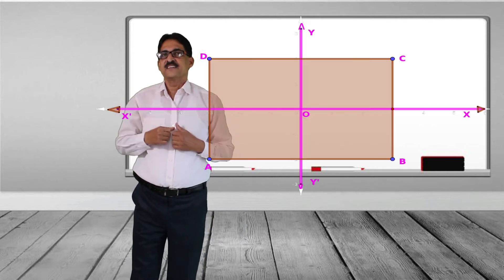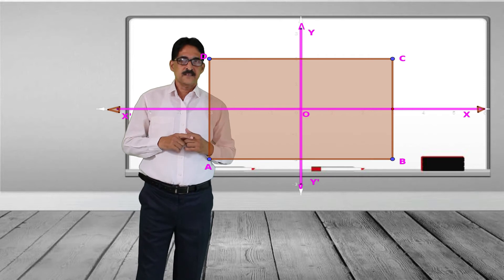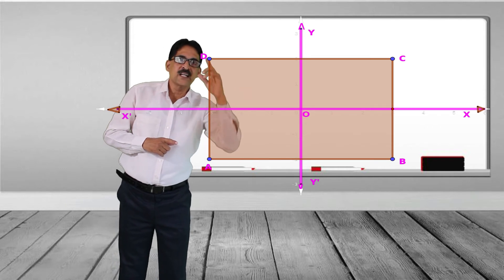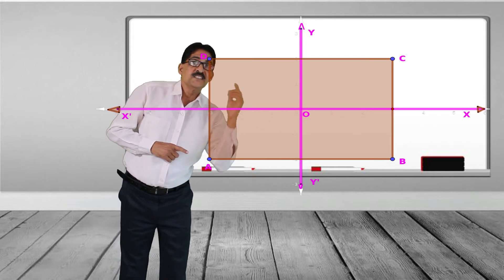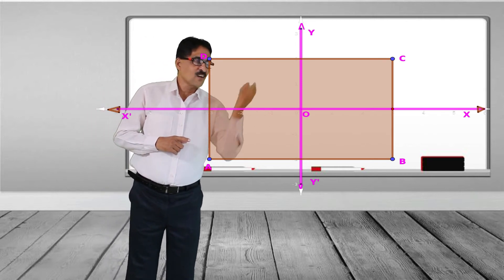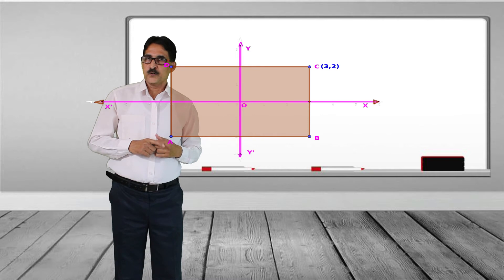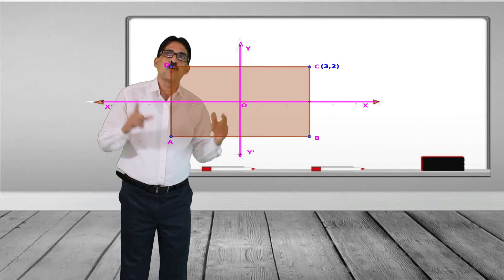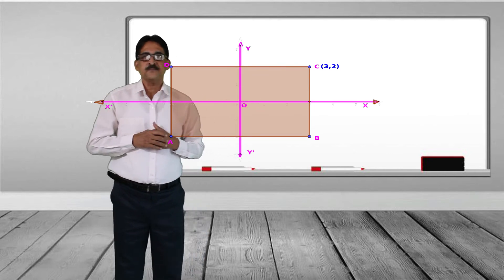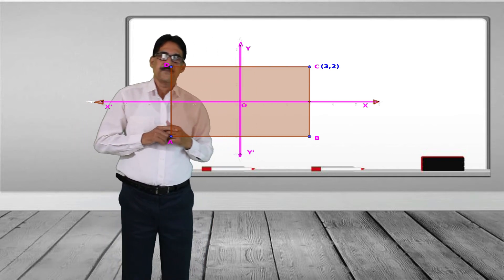In this rectangle, the sides are parallel to the axes and the origin is the midpoint. The coordinate of C is given as (3, 2). The question is to find the coordinates of all the vertices of this rectangle A B C D.